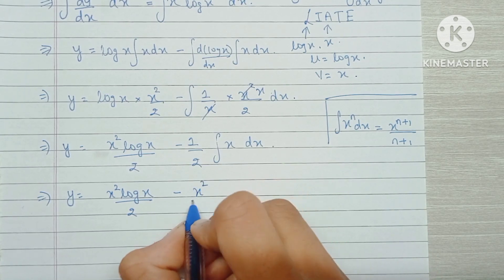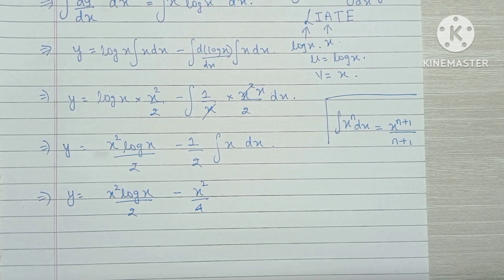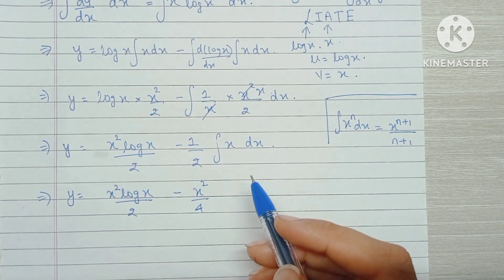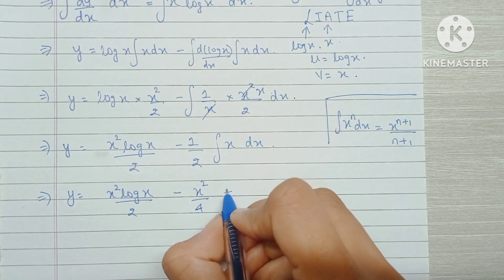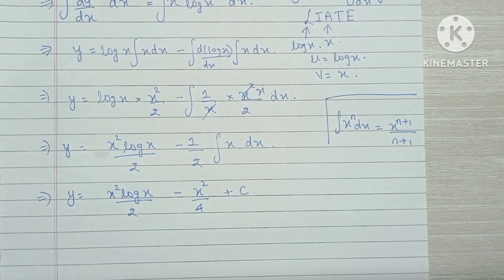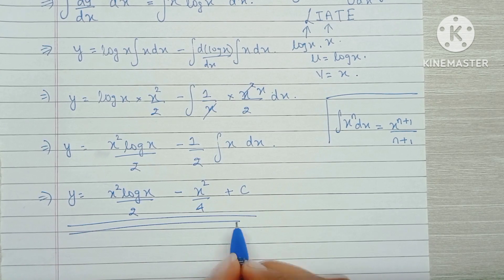We have a minus sign in between, and because there is no other term left to integrate, we add an arbitrary constant. We have successfully removed the differential sign and there is no term left to be integrated, which means this is our final answer.